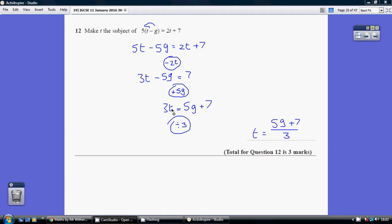So we're nearly there. Remember we want to have t equaling stuff. So we just need to undo this timesing by 3 by dividing by 3. So t equals 5g plus 7 all over 3.